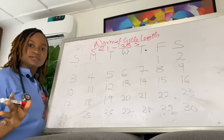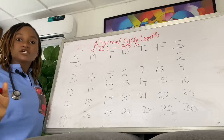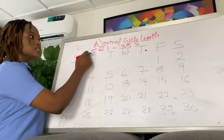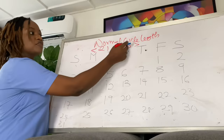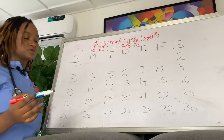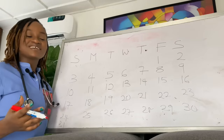A cycle length less than 21 days or greater than 35 days is abnormal. There are a number of disorders that could cause this, so in that case you should see your doctor.